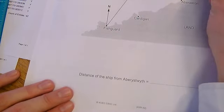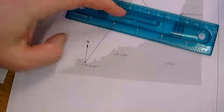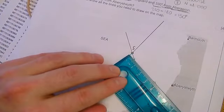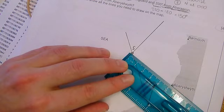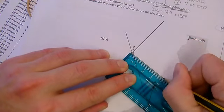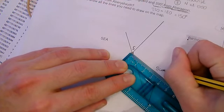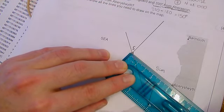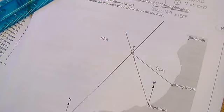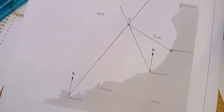So, at Aberaeron here, I need to measure how far away the ship is. That line is five centimetres long. So, is the distance of the ship, is that five centimetres from Aberaeron?